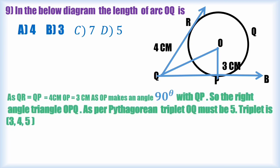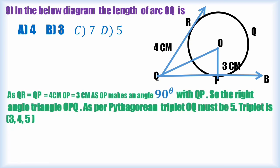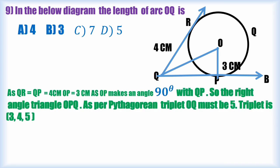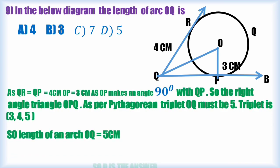As QP is equal to QB equal to 4 cm. OP is given as 3 cm. As OP makes an angle 90 degrees with QB, so the right-angled triangle is OPQ. As per Pythagorean theorem, OQ must be 5. The triplet is 3, 4, 5. So length of the arc OQ is 5 cm. So D is the answer.